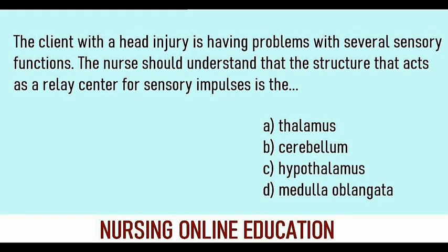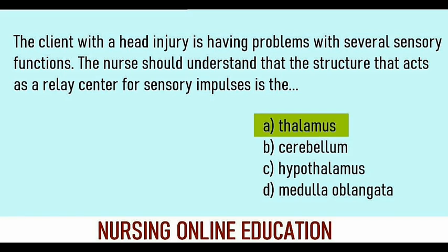The client with a head injury is having problems with several sensory functions. The nurse should understand that the structure that acts as a relay center for sensory impulses is: Options — Thalamus, Cerebellum, Hypothalamus, Medulla oblongata. Answer: Thalamus. Thalamus acts as a relay center for sensory impulses.